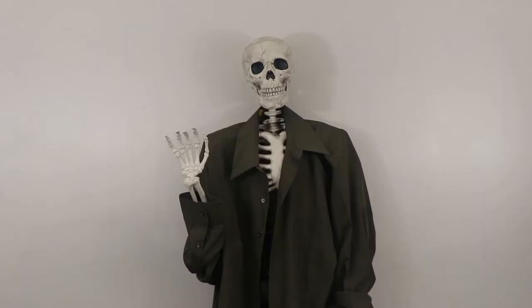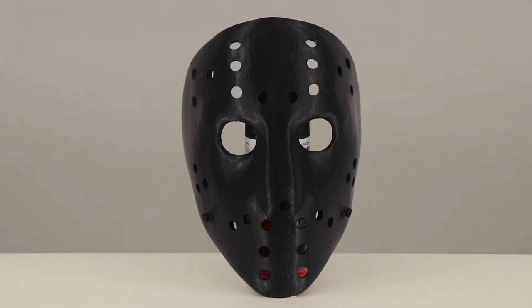For this build, we'll be using several components, among which are a green button-up shirt for the jacket, a dark blue undershirt, a pair of old jeans, and a hockey mask.